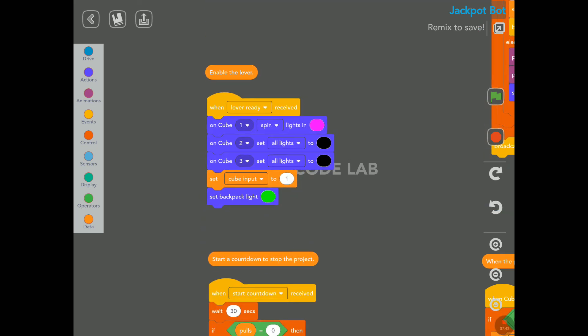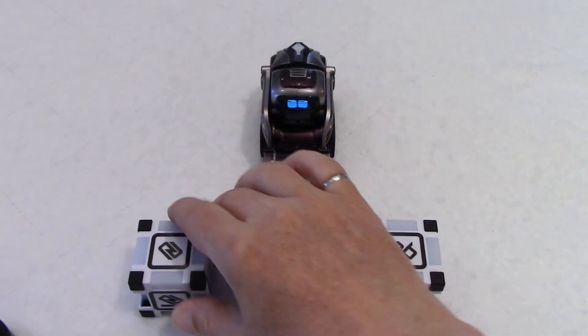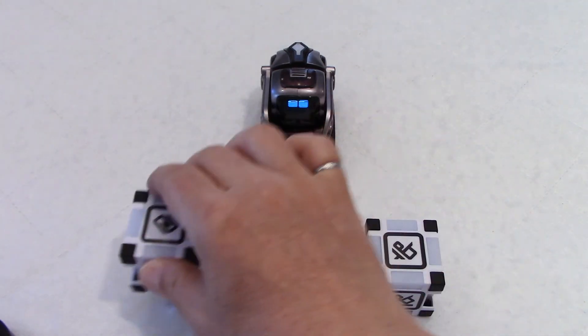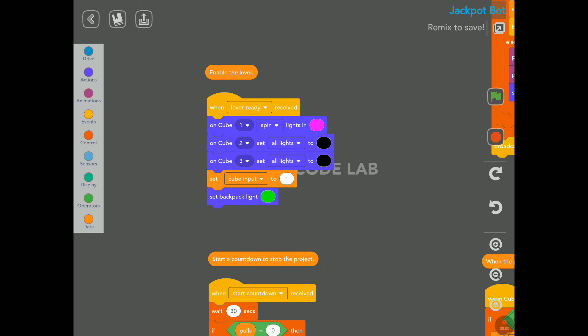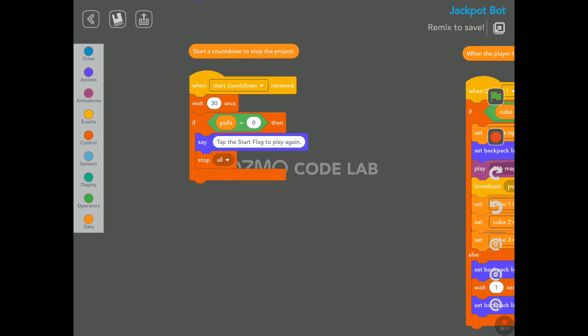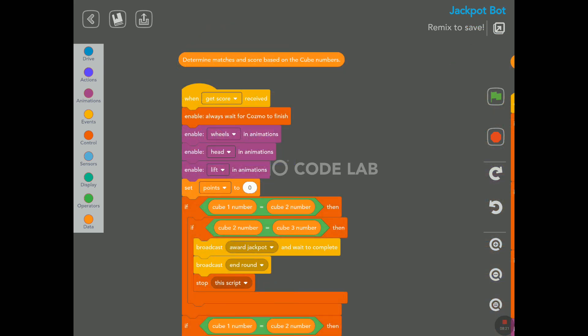Enable the lever, and that was the cube spinning purple. Oh well, you can see here cube number one is spinning purple. So if I had put cube number one in the middle here, the cube in the middle would actually spin. I see, okay good. Start a countdown to stop the project. Tap the start flag to play again. Yeah, you see, after 30 seconds the game will stop by itself. Determine matches and score based on the cube numbers. A lot of if conditions here.